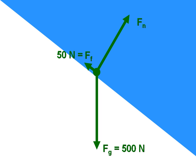So if we zoom into that force diagram and take a closer look, we see that the weight of the sled is 500 newtons and the force that's up the ramp, that turns out to be friction force and that's 50 newtons.